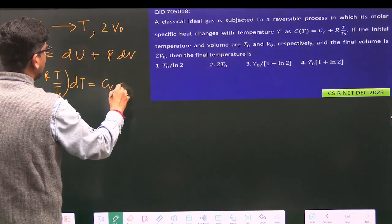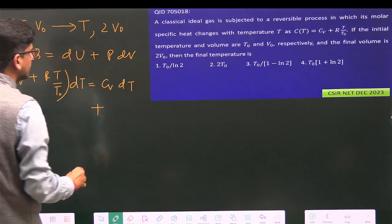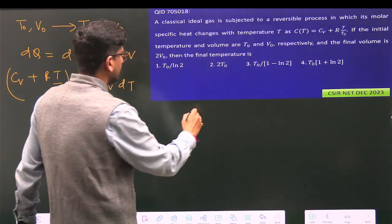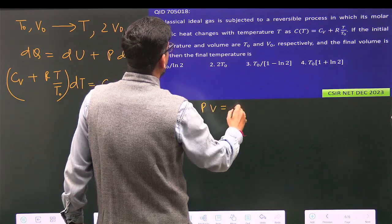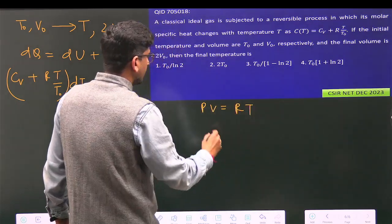This equals dU, which is Cv dT, plus—since it's an ideal gas where PV = RT—we have RT dV/V.